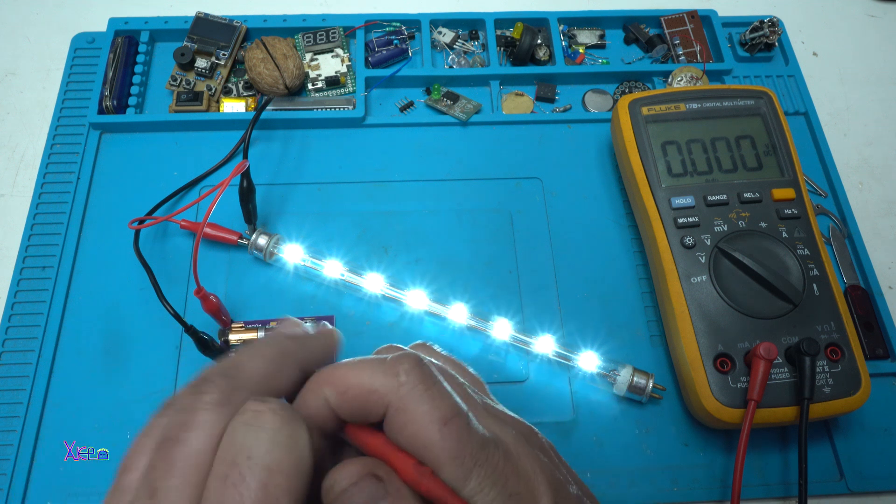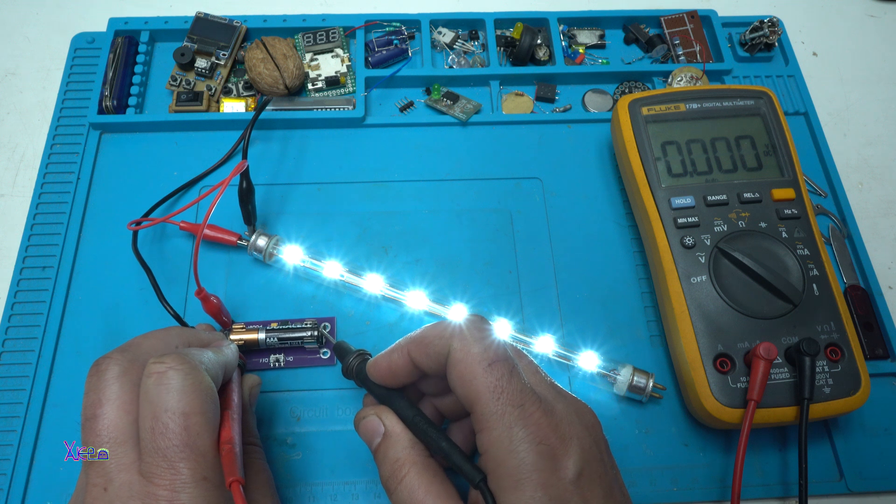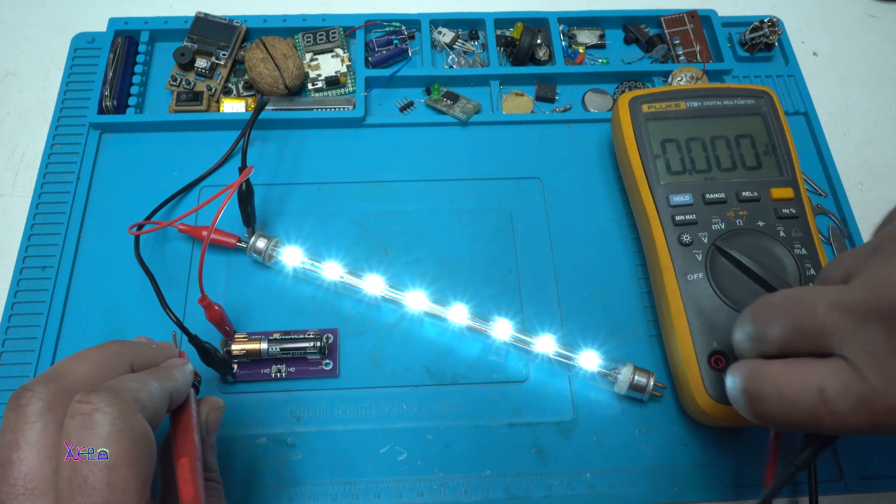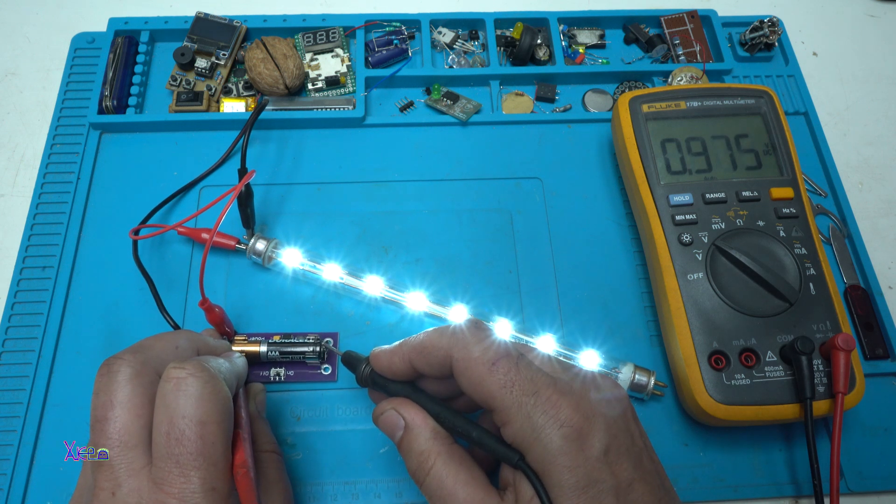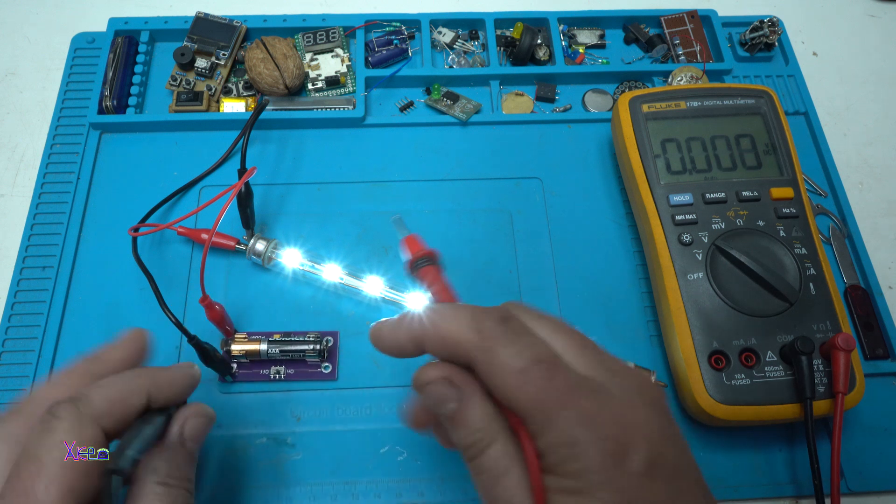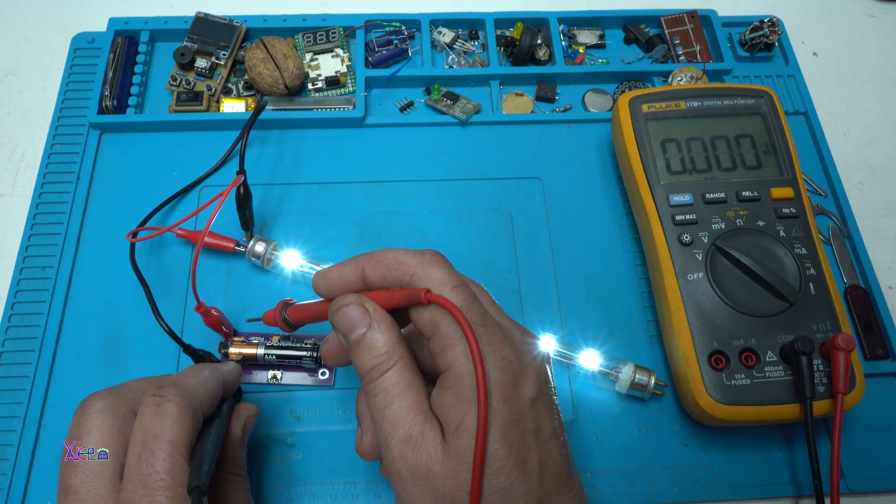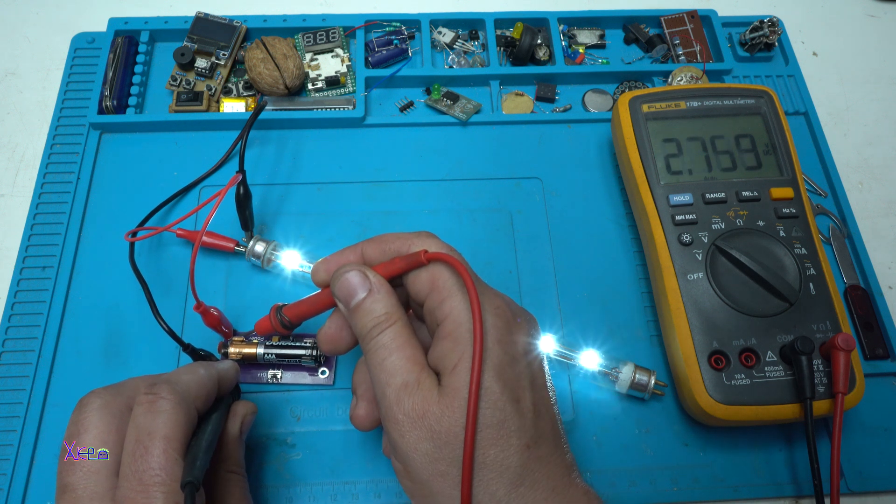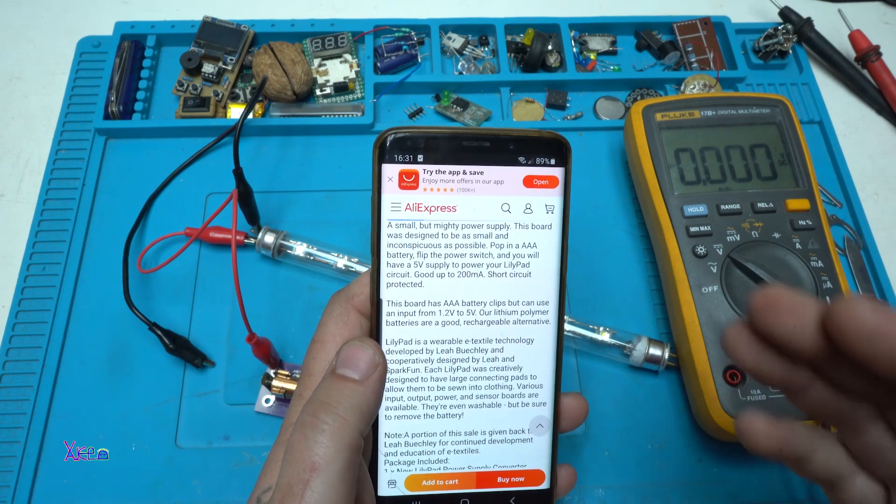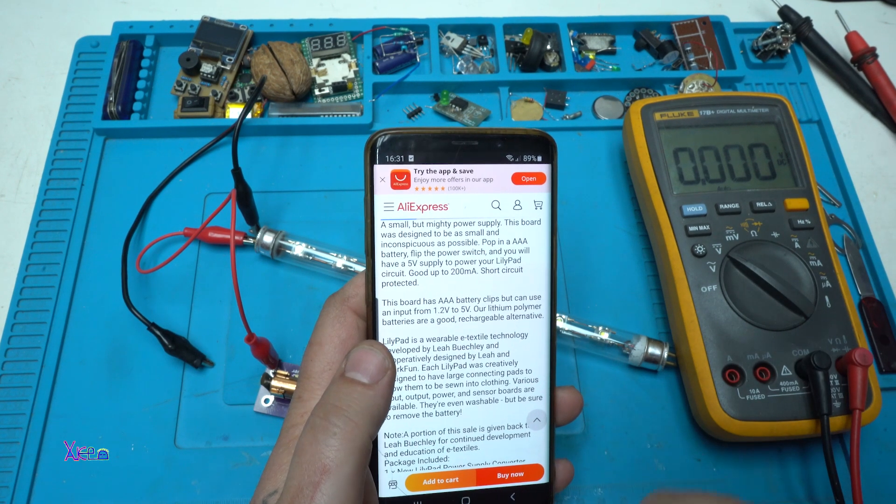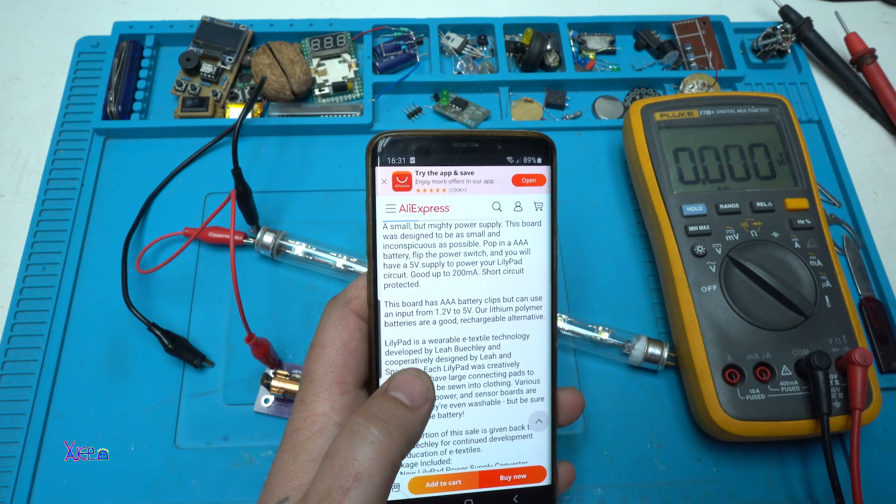Let's measure the voltage of the battery first. Oh, not connected. 0.9 volts. And the output is 2.7 volts. In the description on AliExpress website, it says that this module can deliver 200 milliamps.